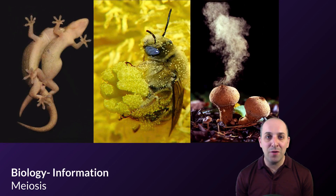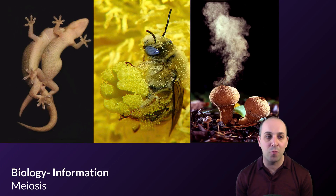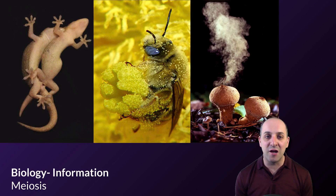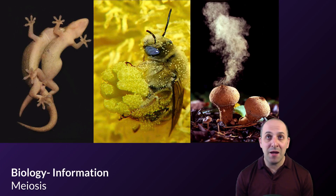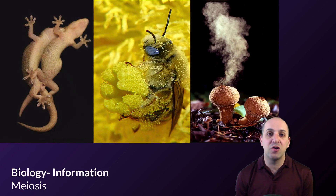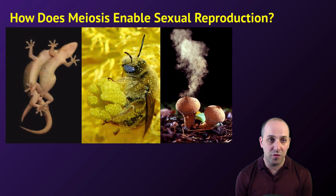You probably think about sexual life cycles as resembling something like the image all the way over on the left with lizards, but what you need to understand is that sex is much more diverse than that. Many organisms engage in sexual life cycles, including plants, fungi, and many unicellular organisms as well. Without exception, and however you do it, sexual reproduction depends on meiosis.